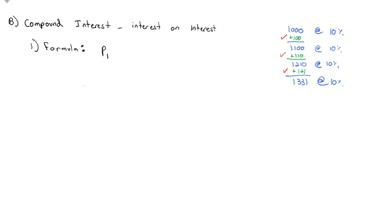The final amount is equal to the initial amount times 1 plus the interest rate divided by the number of compounds raised to the number of years times the number of compounds. And this becomes our second important formula for today.